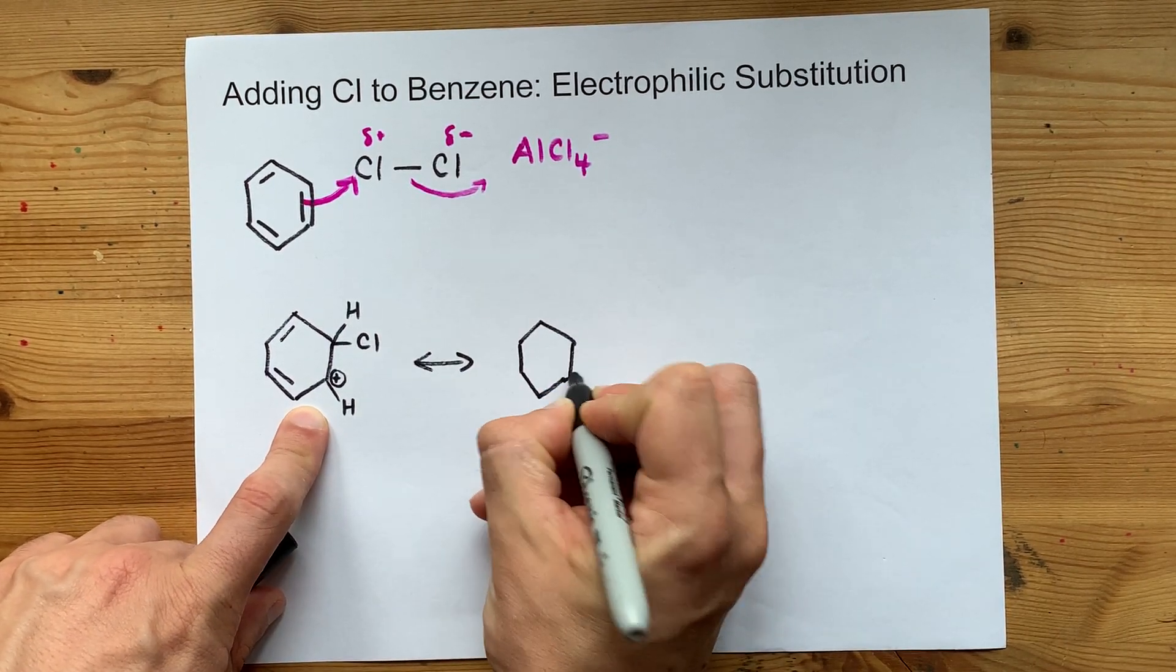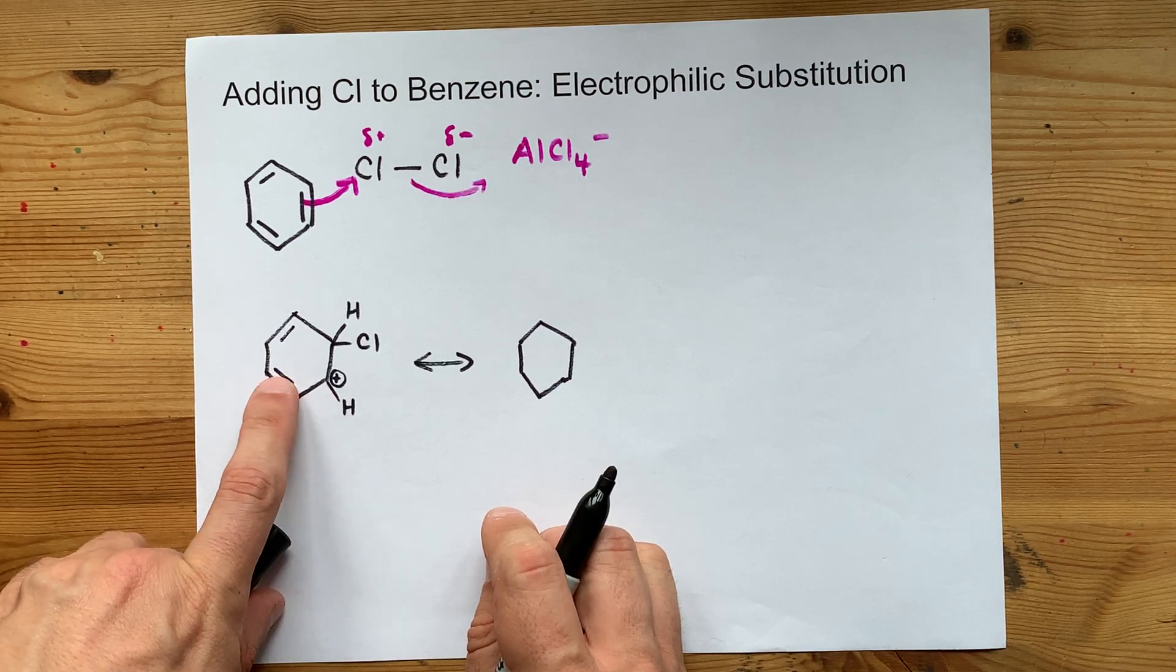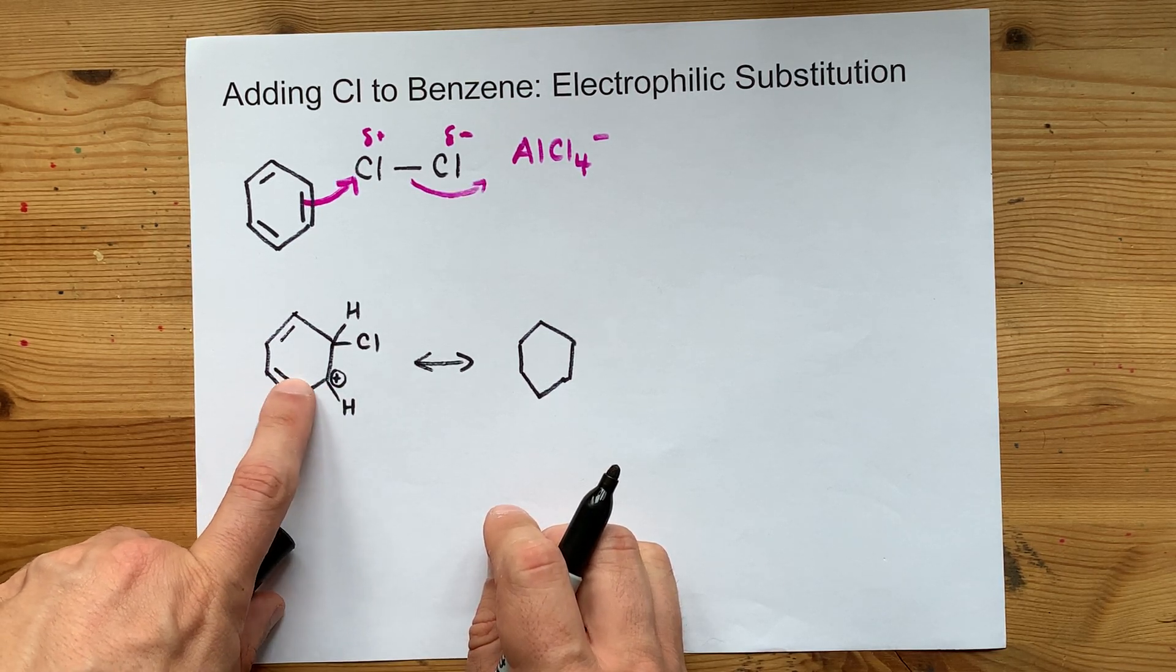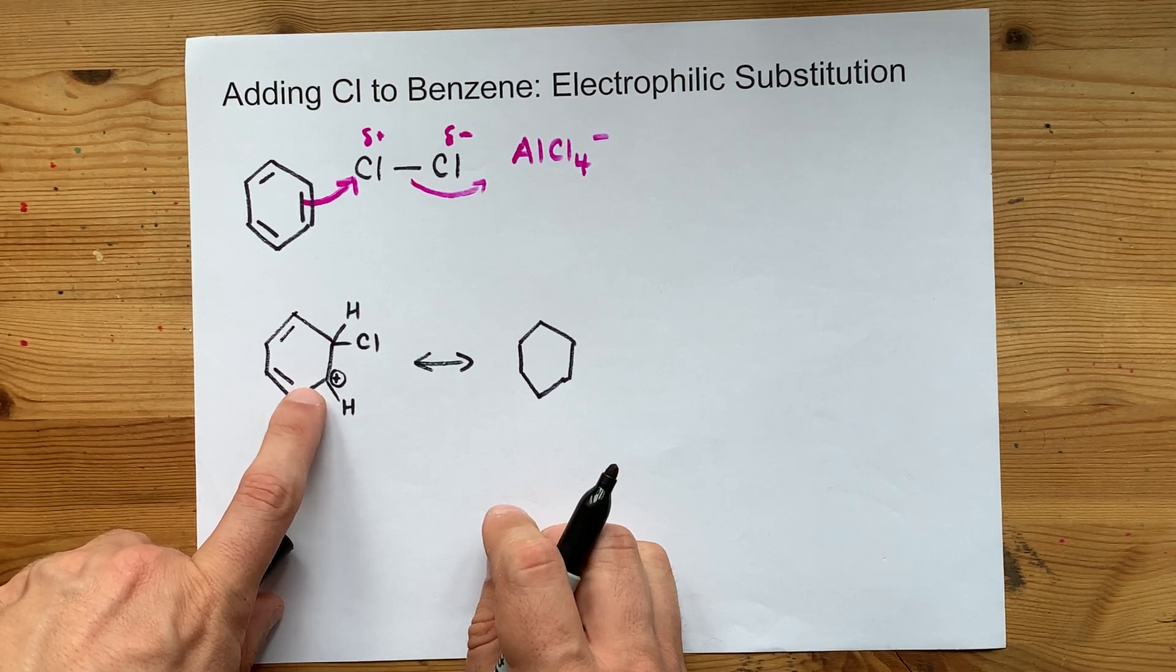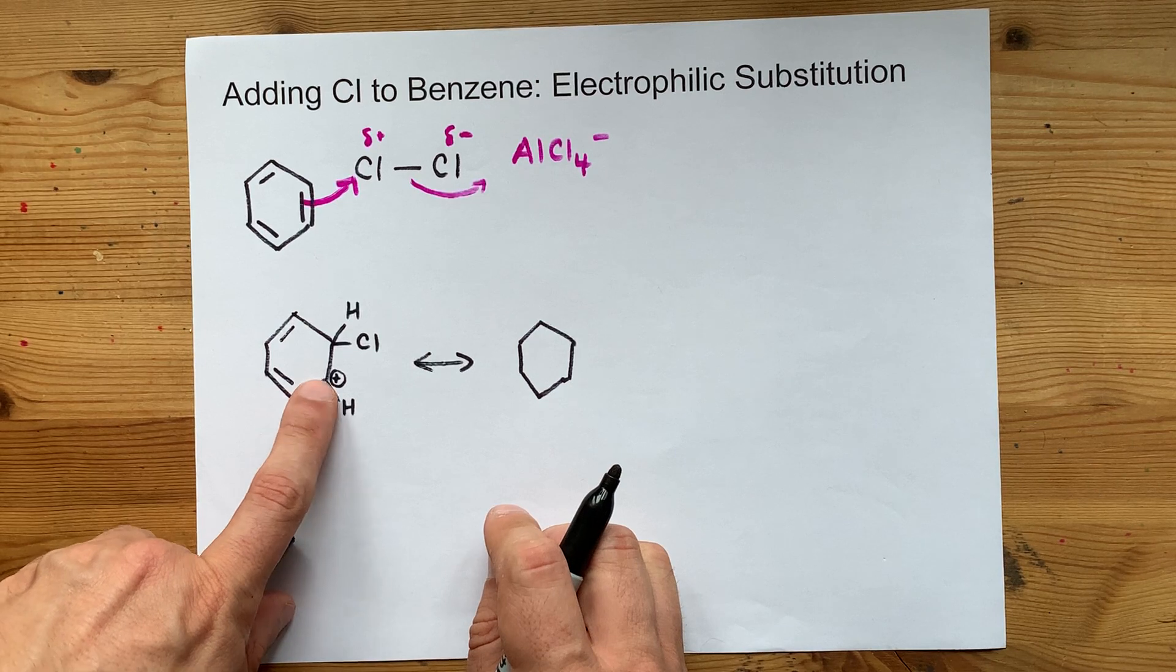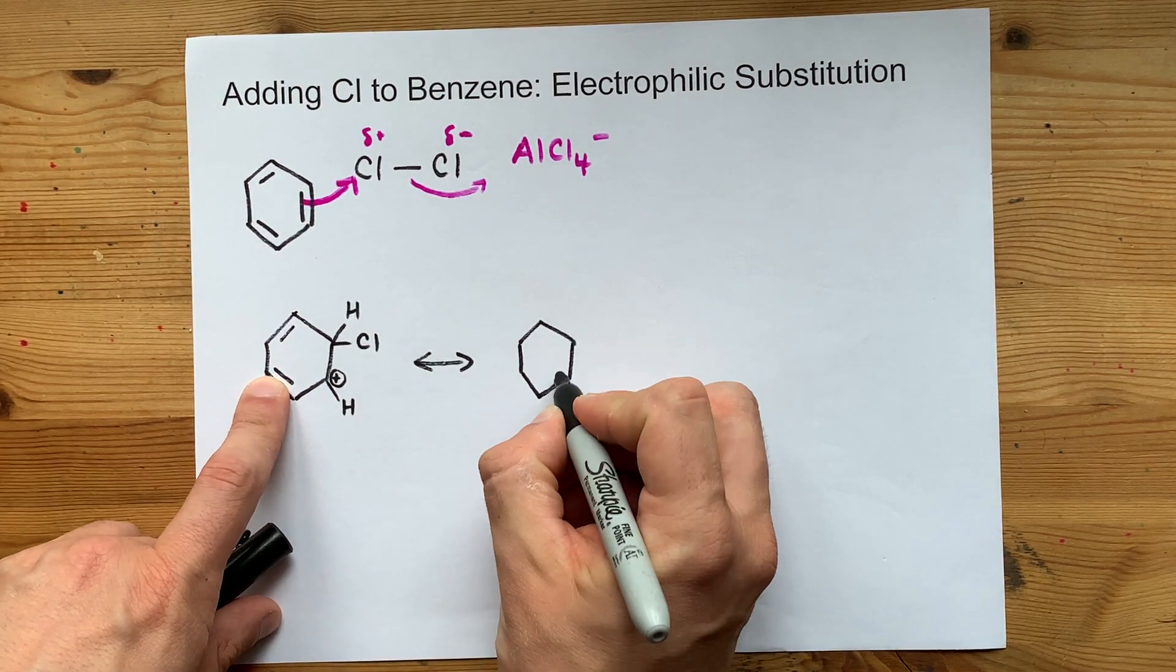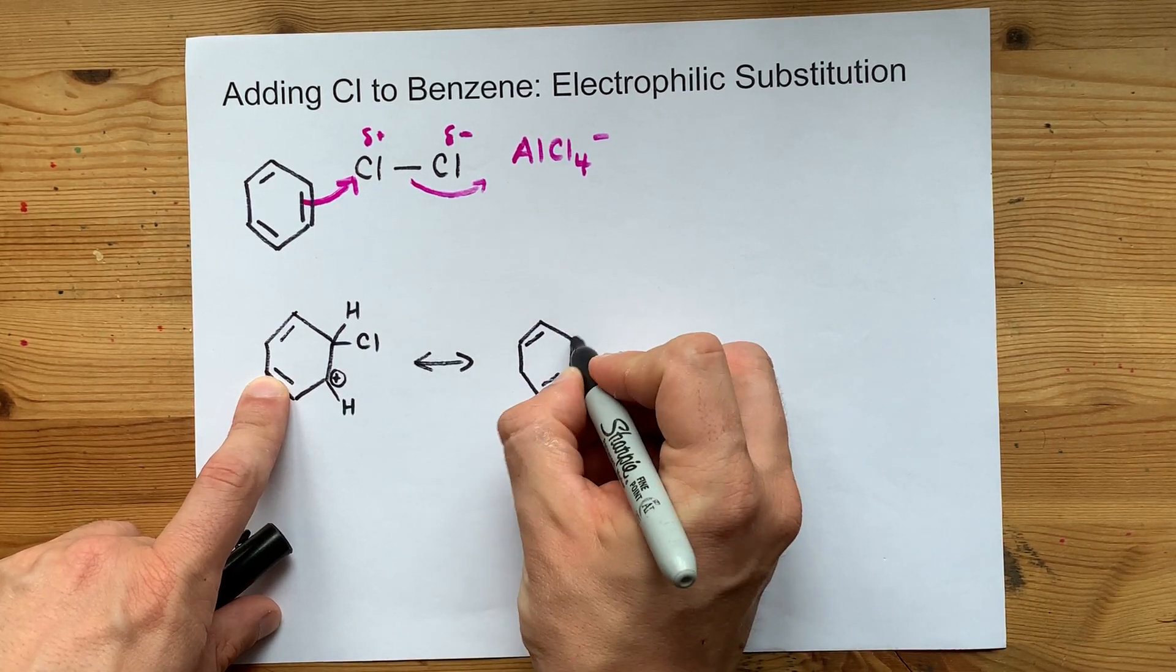The double bond that you see here could move, like the pi electrons could delocalize to here. That would form a double bond between these two carbons, and it would become this carbon that's missing the extra bond. That would make these two double bonds.